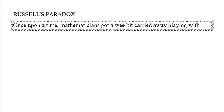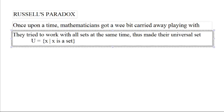Russell's paradox. Once upon a time, mathematicians got a wee bit carried away playing with sets. And they came up with things like the universal set was the set of all sets. They tried to work with all of the sets all at the same time.